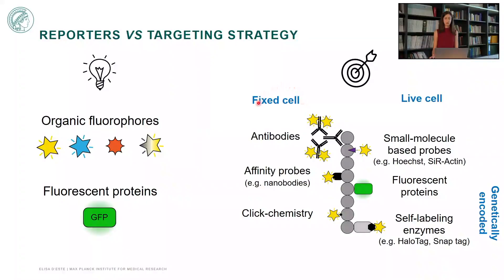Strategies that can be used for fixed cells include the use of antibodies — a primary antibody targeting the structure of interest, and then a secondary antibody recognizing the primary antibody and carrying the reporters. We can also use affinity probes that recognize our target with high affinity, such as nanobodies, affimers, or DARPins. Or we can use a click chemistry approach in which we introduce an unnatural amino acid in the protein of interest and then covalently bind the reporter to the protein.